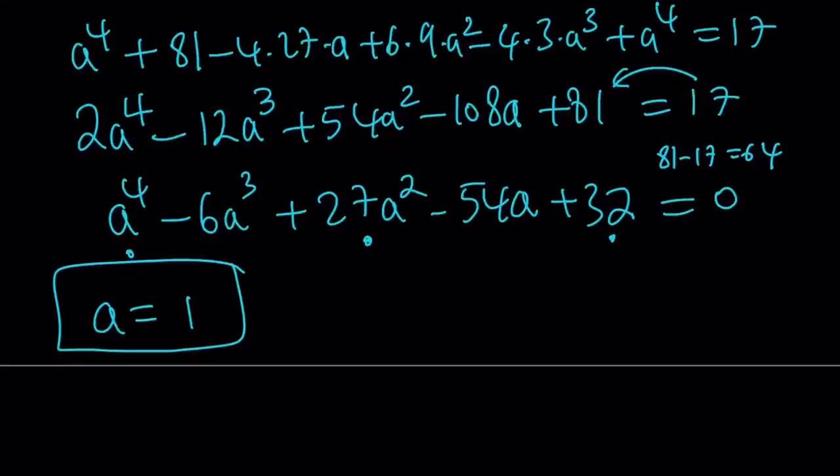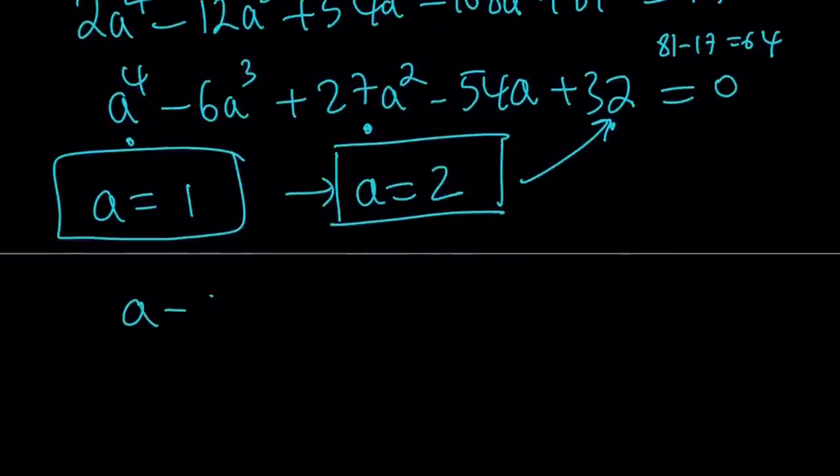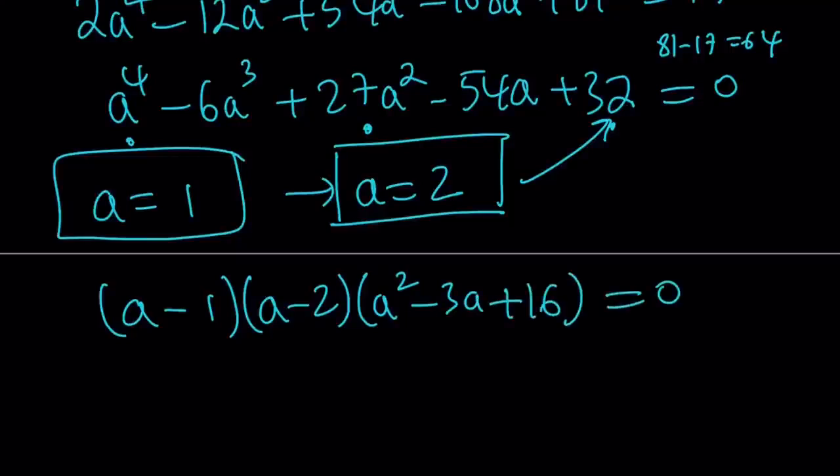But, are there any other solutions? This is a Quartic? There must be. Well, if you kind of divide this by a minus 1, I'm going to spare you the trouble. You'll notice that a equals 2 is another solution. Or, you could use the factor theorem or what is it called? Rational root theorem. Yes, that's what it is. Divisors of 32. There's quite a few. But, definitely 2 is one of them because 2 is a power, or 32 is a power of 2. Anyways, to keep a long story short, again, I'm going to give you, for the sake of time, the other factor is going to be a squared minus 3a plus 16. And the whole thing is equal to 0. So, that's my Quartic.